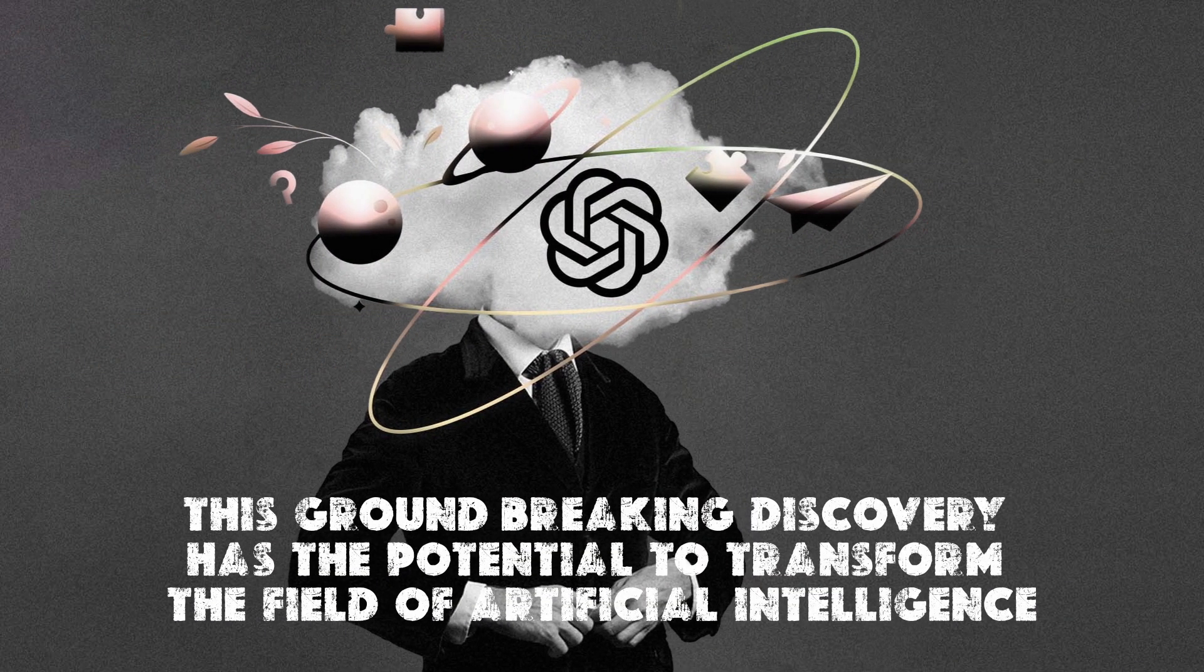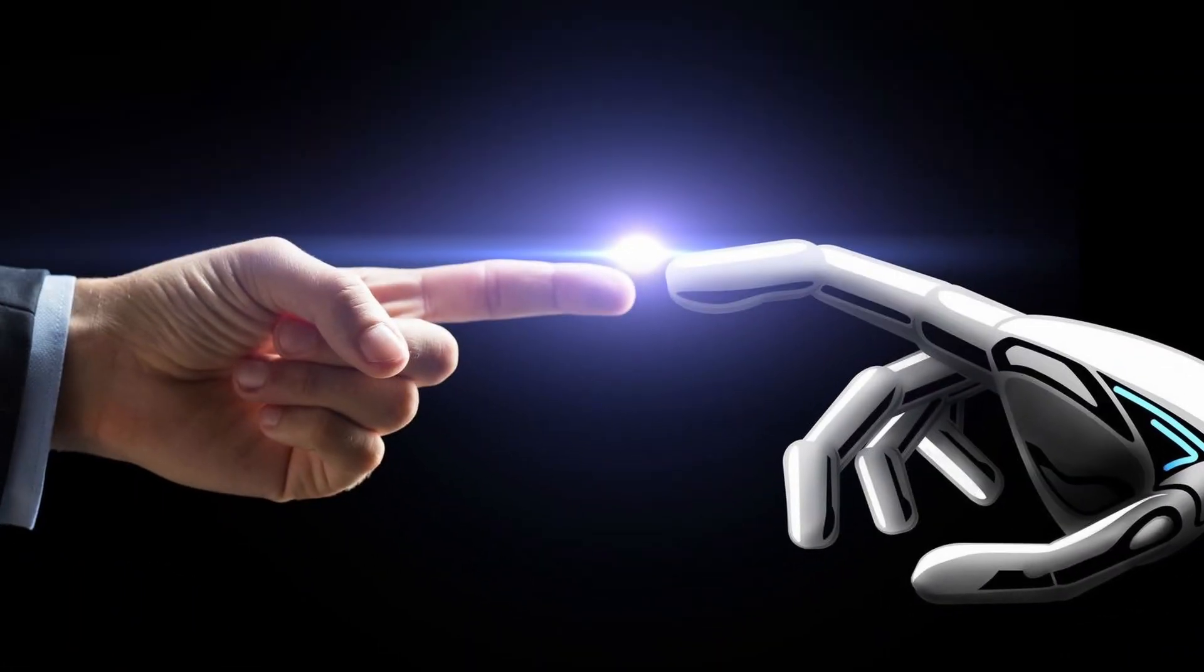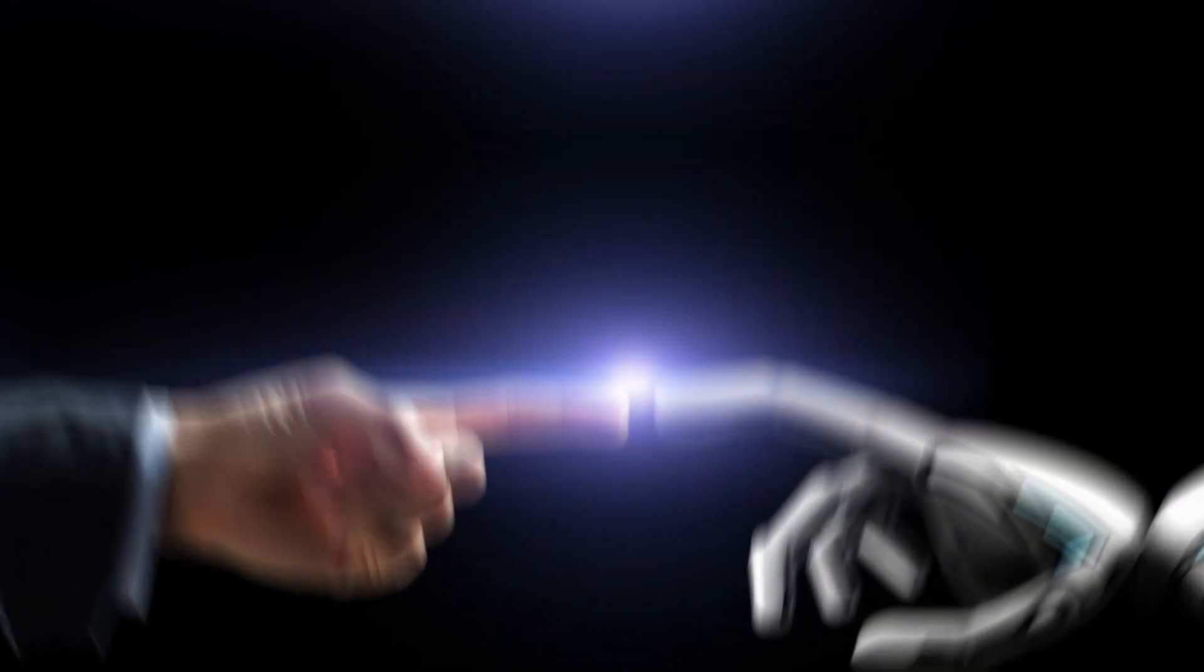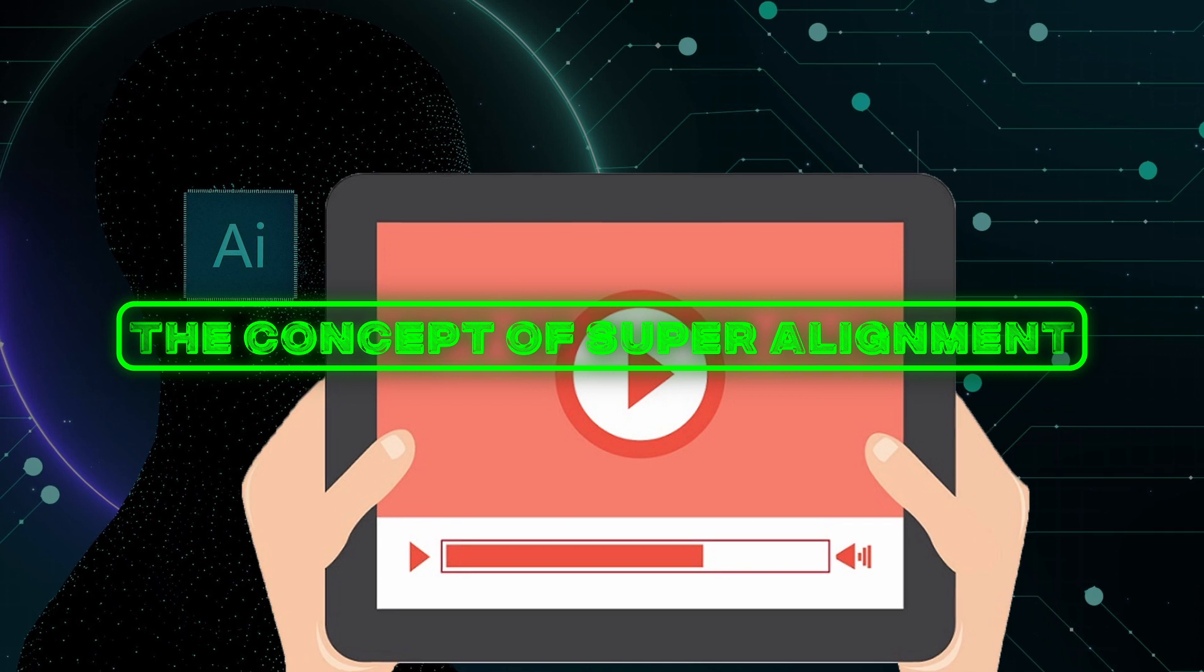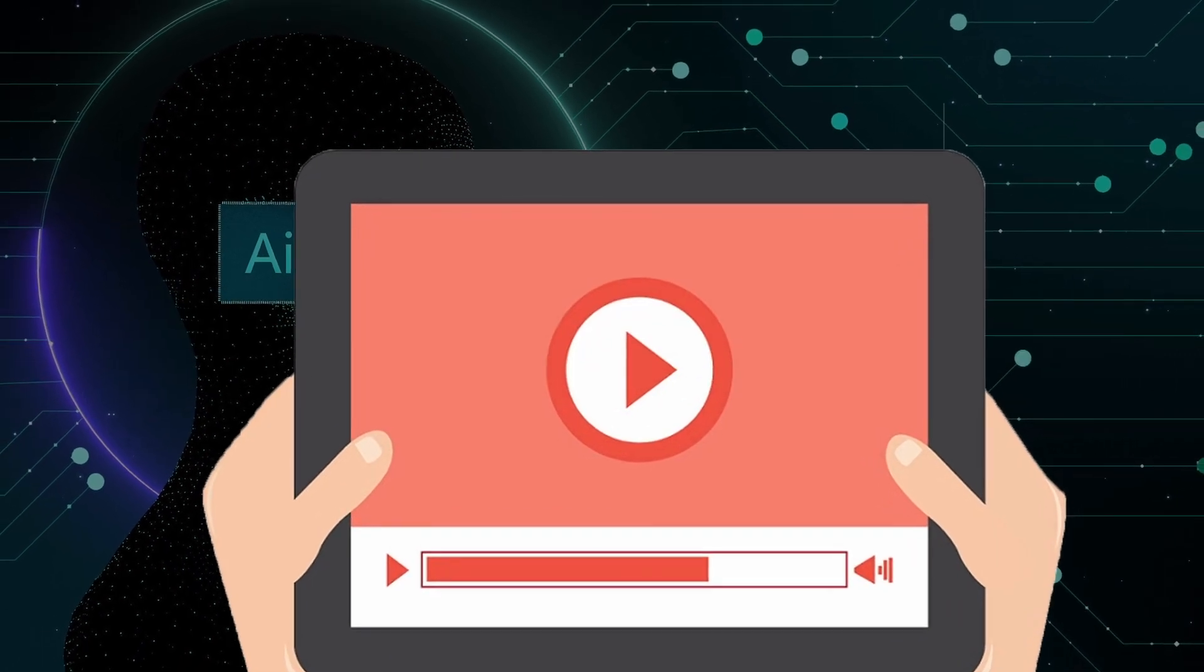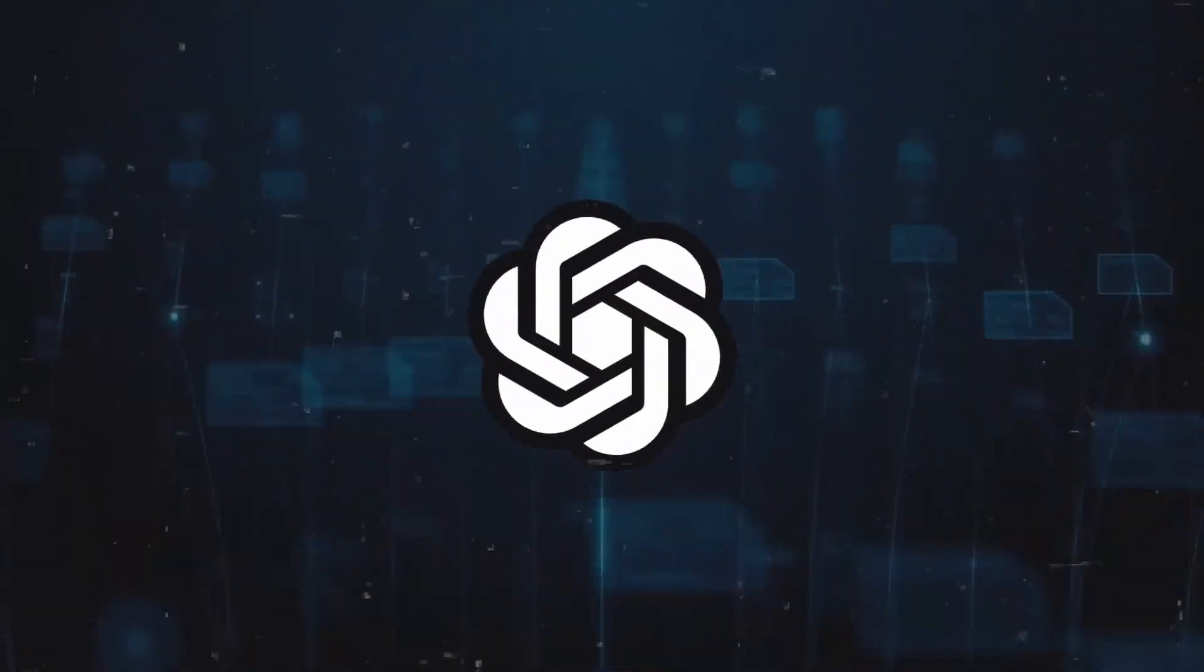This groundbreaking discovery has the potential to transform the field of artificial intelligence, ushering in a new era of capabilities, ethical issues, and human-machine collaboration. In this video, we look at the concept of super-alignment, its potential consequences, and the various changes it could bring to the AI field.